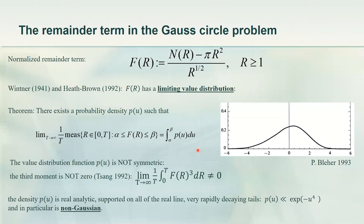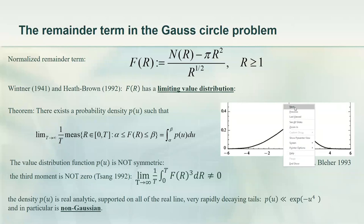We know quite a lot about the distribution now. It is real-analytic and it decays much faster than the Gaussian — it's almost compactly supported. It decays like e^{−u^4} instead of e^{−u^2}. So there is a distribution, it's not Gaussian, and we can't use this heuristic to generate the proof because it predicts something wrong.